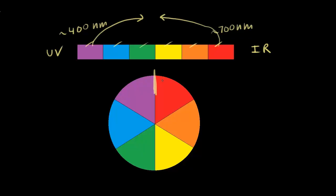It's useful to look at a color wheel because it allows you to see the relationship between complementary colors. For example, if I wanted to know the complementary color for red, I look across the color wheel and see that it's green. The complementary color for violet, looking directly across, is yellow. And the complementary color for blue would be orange.